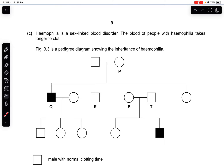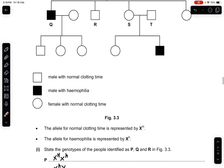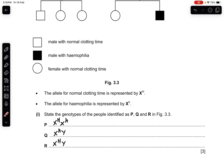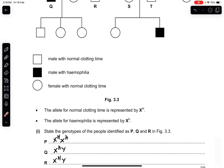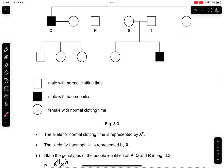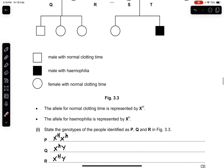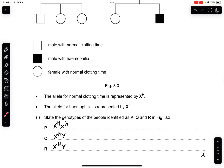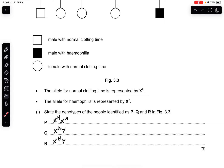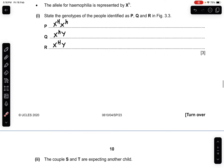Part C: haemophilia is a sex-linked blood disorder. The blood of people with haemophilia takes longer to clot. Figure 3.3 is a pedigree diagram showing the inheritance of haemophilia. The allele for normal clotting time is X^H and the allele for haemophilia is X^h. Part 1: state the genotypes of P, Q, and R. P is a female with normal clotting time: X^H X^H. Q has haemophilia: X^h Y. R is male with normal clotting time: X^H Y.